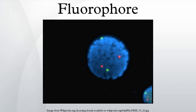A fluorophore is a fluorescent chemical compound that can re-emit light upon light excitation. Fluorophores typically contain several combined aromatic groups, or planar or cyclic molecules with several pi-bond systems.